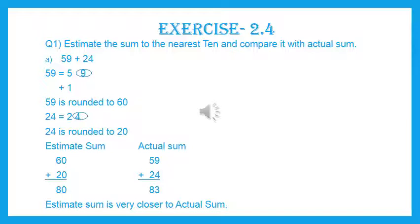For the actual sum, we add the original numbers: 59 plus 24. 9 plus 4 is 13, so we write 3 with carry 1 on top. Then 5 plus 2 is 7, plus 1 is 8. So the actual sum is 83. You can see the estimated sum and actual sum are very close to each other — 80 and 83. We have to write down the comparison line: estimated sum is very close to actual sum.